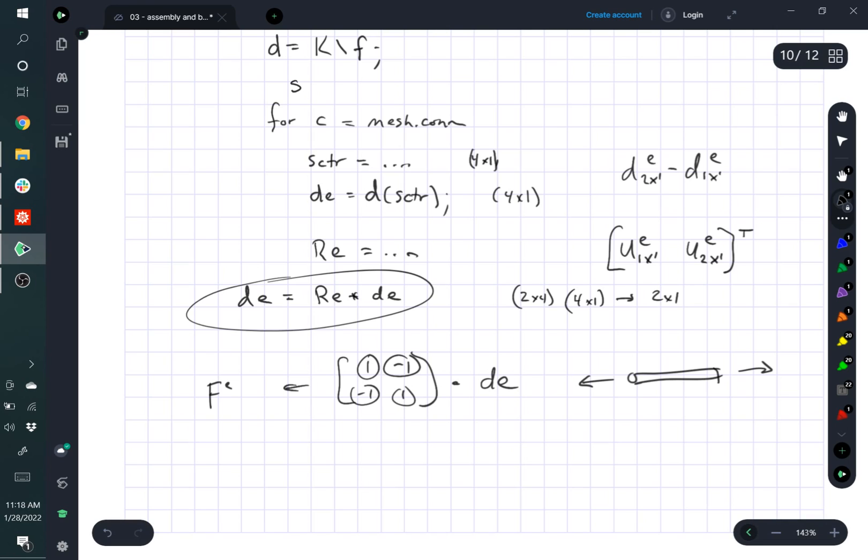There's a few ways you could do this. The first way is you could say, well, I'll call my strain sig for sigma, and I'll initialize it as zeros by the number of elements by one. So that's one way I could do it. But the problem is,